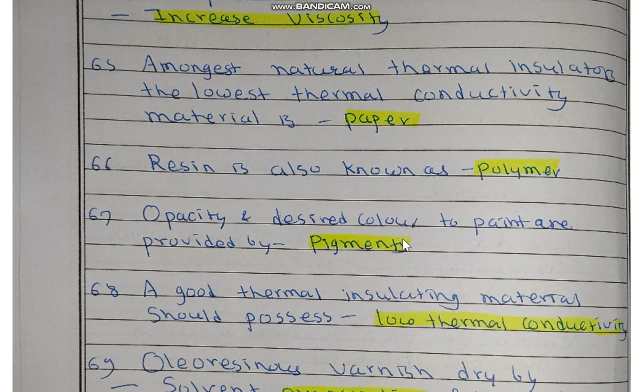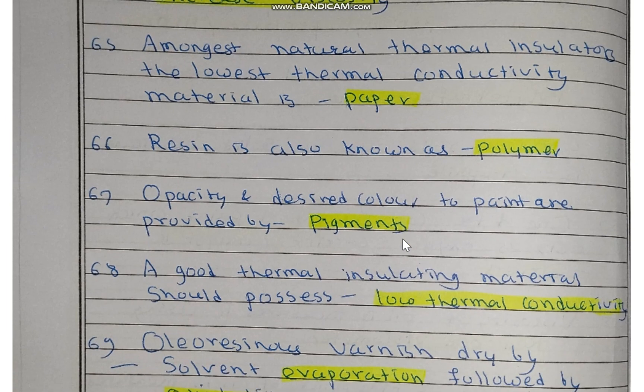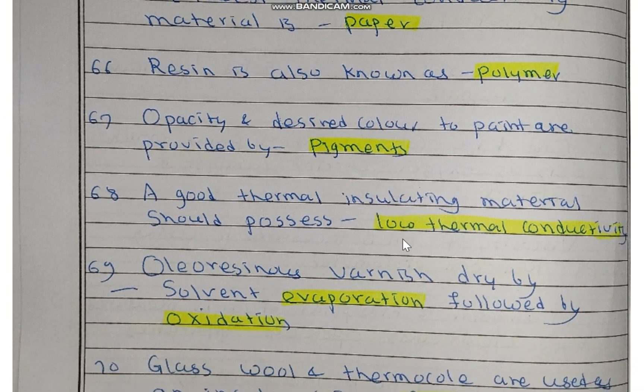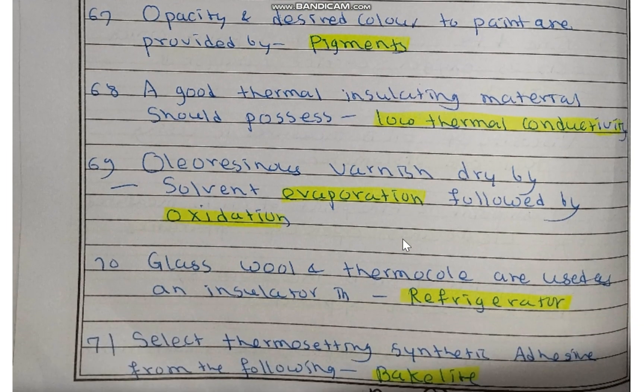Among natural thermal insulators, the material with the lowest thermal conductivity is paper. Other examples are wool and wood — these have the lowest thermal conductivity. Resin is also known as a polymer. Opacity and desired color to paint are provided by pigment. A good thermal insulating material should possess low thermal conductivity.